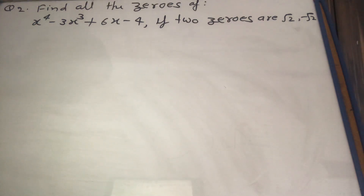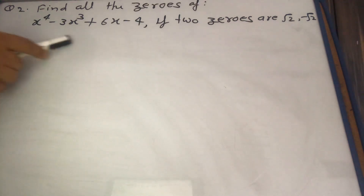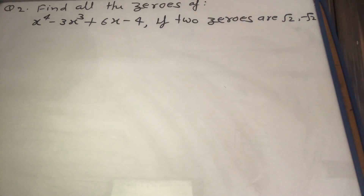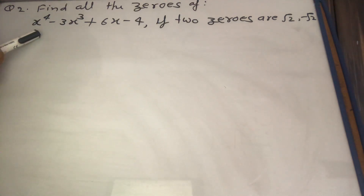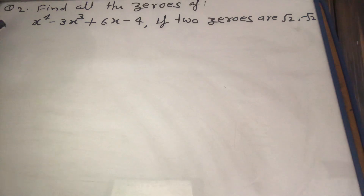In this polynomial, two zeros are already given: √2 and −√2. By observing the polynomial, the highest degree term is x⁴, so this polynomial contains 4 roots. Two are already given, so 2 are remaining. We will find the other two remaining zeros.